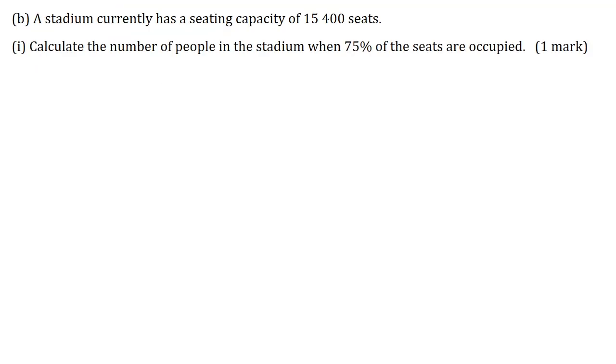Part B. A stadium currently has a seating capacity of 15,400 seats. Part 1: Calculate the number of people in the stadium when 75% of the seats are occupied for one mark. I will take the number of seats here, 15,400 and multiply it by 75 over 100. Place this over 1. And when I multiply this out here, I am getting here 11,550 persons.